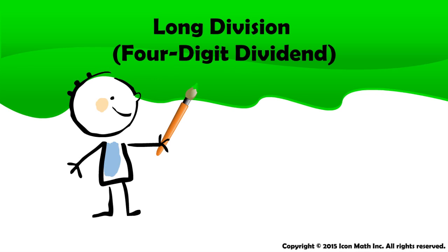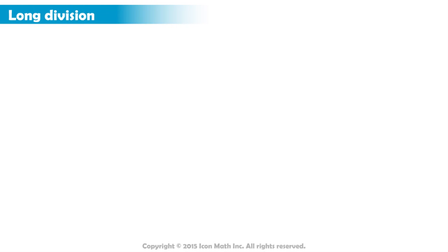Long Division: Four-Digit Dividend. In this lesson, you will learn how to divide a four-digit dividend by a one-digit divisor using long division. In long division, we carry out four steps for each digit in our dividend. A shortcut name for this is DMSB.